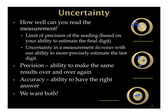Maybe the device doesn't have enough increments and you have to estimate some of the digits. Uncertainty in a measurement decreases as you get more and more precise. A ruler with finer markings is more precise, giving you a more precise measurement and less uncertainty — you become more certain of that measurement.